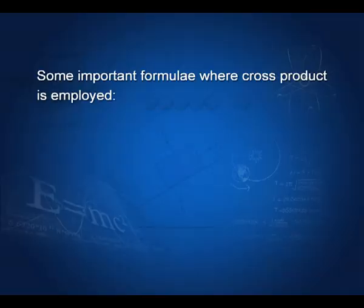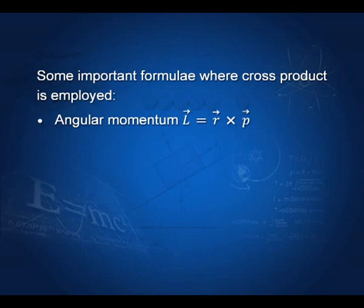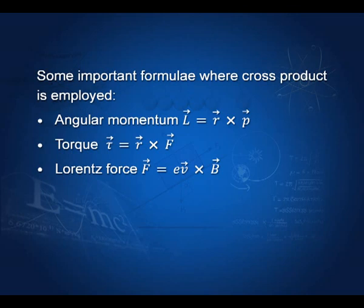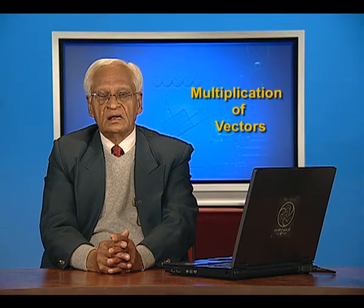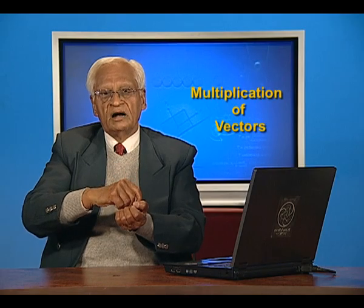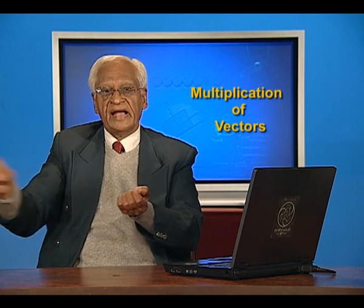Some important formulae where the cross product is used in physics are: angular momentum, which is the product of position vector r and momentum vector p — so angular momentum vector L = r × p; torque, which equals the cross product of the position vector r and the applied force vector; and the Lorentz force, F = qv × B, where q is the charge, v is the velocity of the charged particle, and B is the magnetic field in which the particle is moving. In the next lecture, we shall take up resolution of vectors and see how a vector can be resolved into components along the axes of a frame of reference.